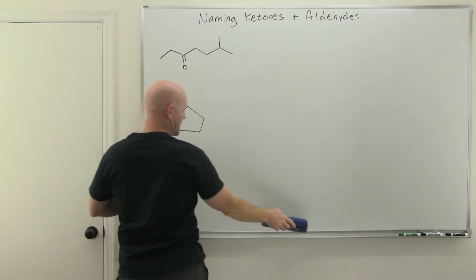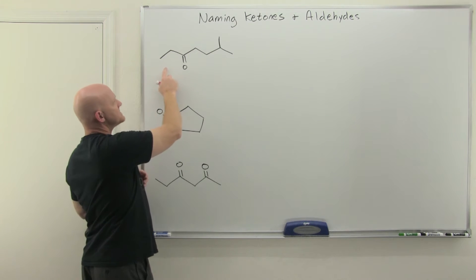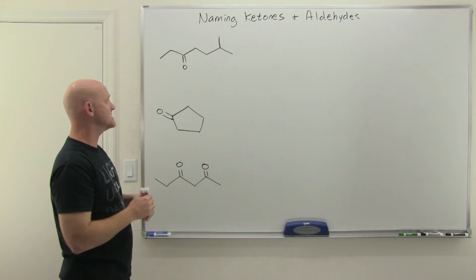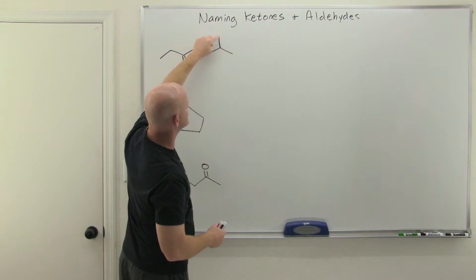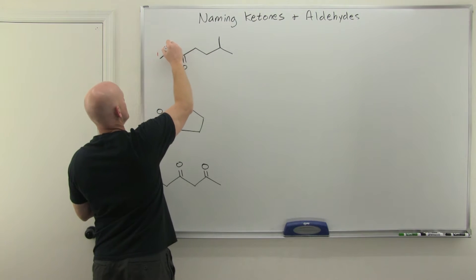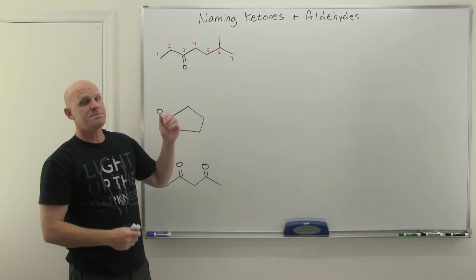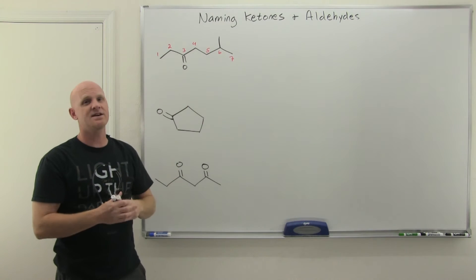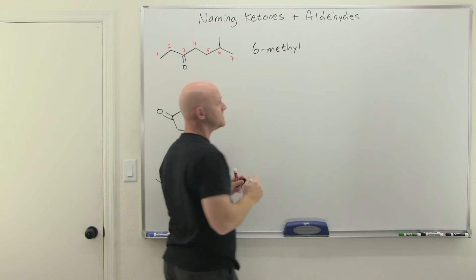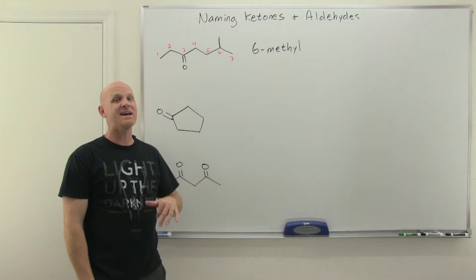Now we're going to go through the IUPAC nomenclature of ketones. For ketones, the suffix is O-N-E for ketone. You want to find your longest continuous carbon chain that the carbonyl carbon is a part of, and then number it to give the carbonyl carbon the lowest possible number. So in this case, we've got seven carbons. And if we number left to right, the carbonyl is going to get a lower number. The only thing that's not part of that parent chain is the methyl group attached at position six. When it's a substituent, we name those first. So we'll start this off with 6-methyl. And then your parent chain, with seven carbons, that's heptane. So this is going to be heptanone.